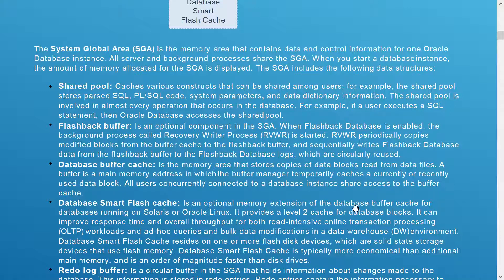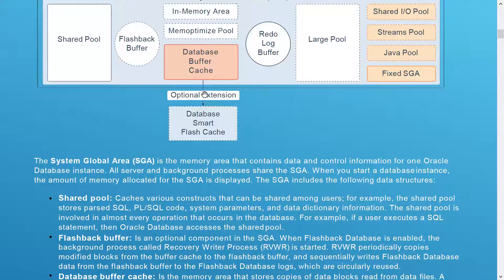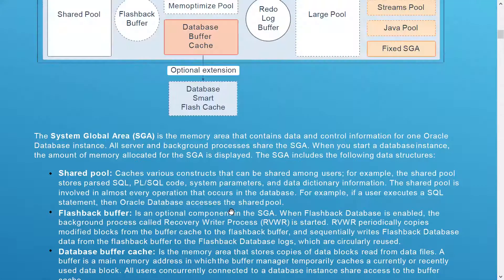The Database Smart Flash Cache is an optional memory extension of the Database Buffer Cache for databases running on Solaris or Linux systems. It provides a level to cache database blocks, and it can improve response time and overall throughput for both read-intensive OLTP workloads as well as ad hoc queries and bulk data modifications in data warehouse environments. A Database Smart Flash Cache resides on one or more flash disks. If this feature is enabled, it provides faster data access operations.